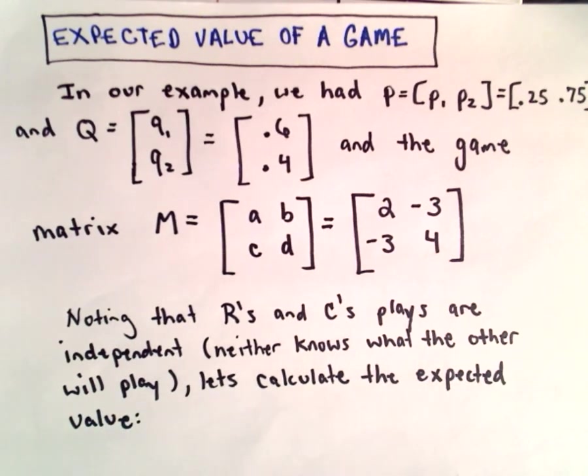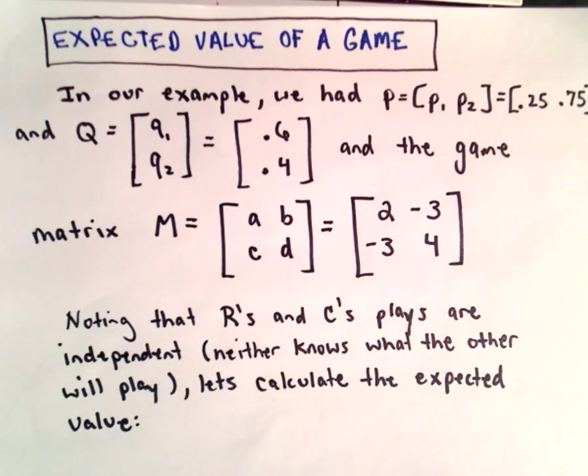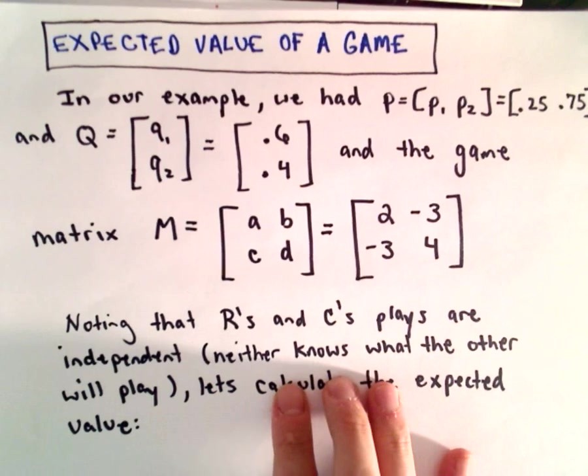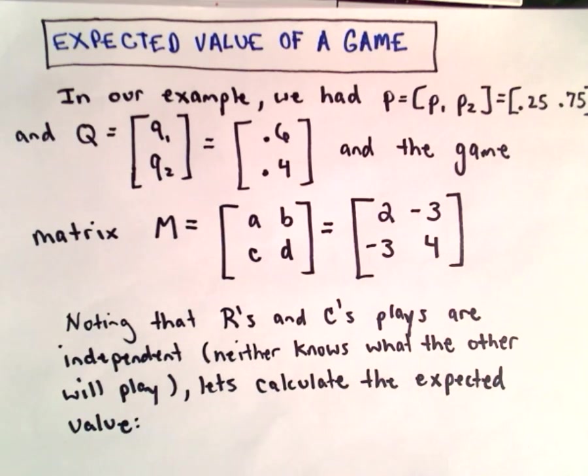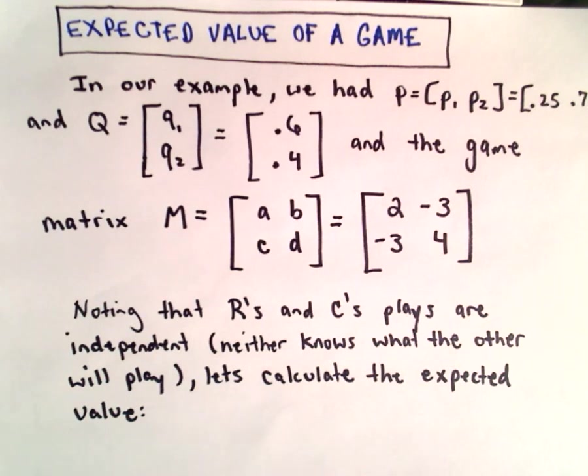One thing to point out is that the row player and the column players, their plays are going to be independent because neither knows what the other one is going to do. So we're going to use the notion of independence and the notion of expected value to compute a probability. If you've seen expected values and probability, we're going to use exactly that same idea.